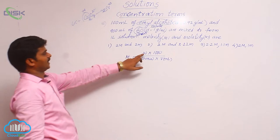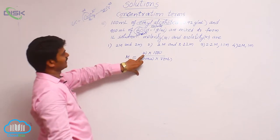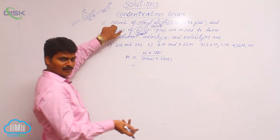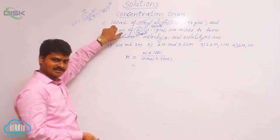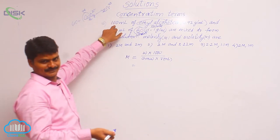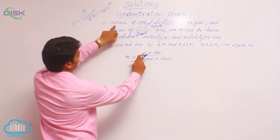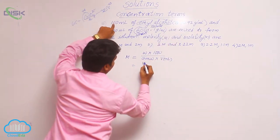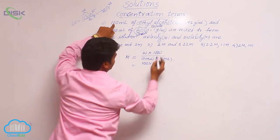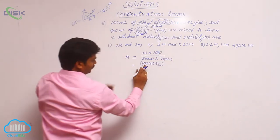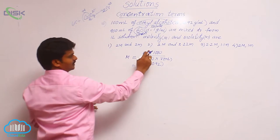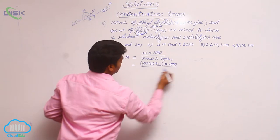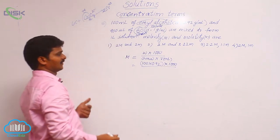W means weight of solute, that is weight of ethyl alcohol, which is not directly given — its volume is given. To find weight, we use the relation: mass equals volume multiplied by density. So weight of ethyl alcohol equals 100 ml multiplied by density 0.92, giving the mass of solute, which goes into the numerator divided by gram molecular weight of ethyl alcohol.